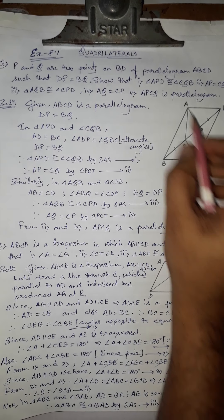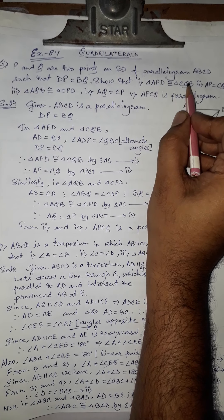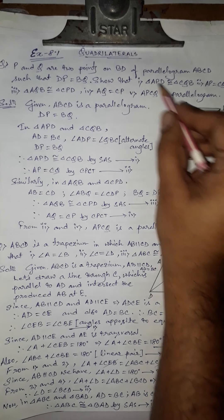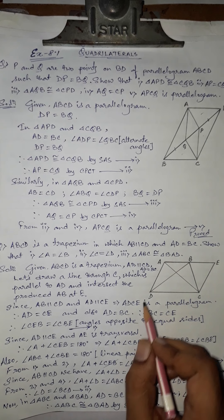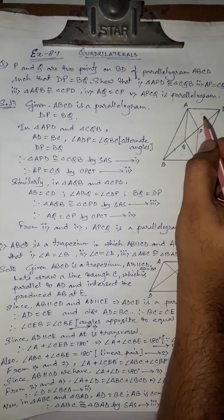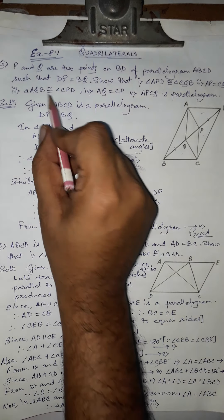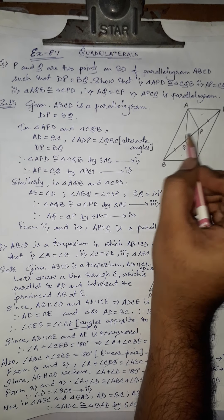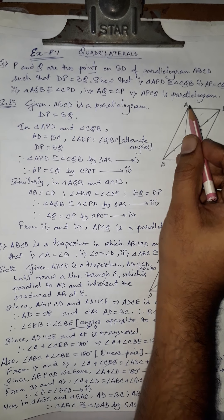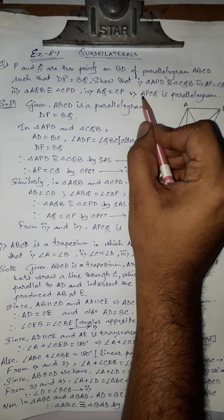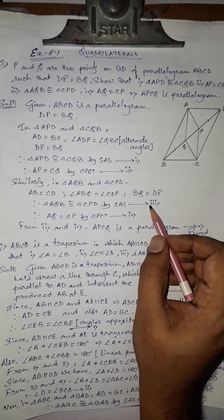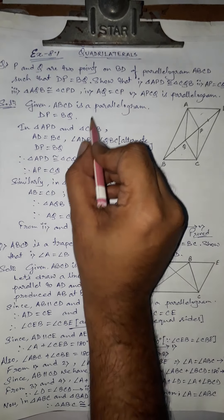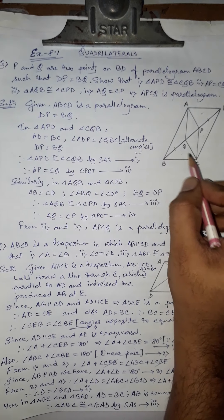There are five things we have to prove. First, that triangles APD and CQB are congruent. Second, that AP and CQ are equal. Third and fourth, two more triangles are equal and their sides are equal. Last, that APCQ is a parallelogram.